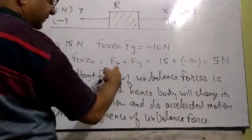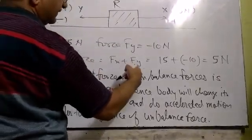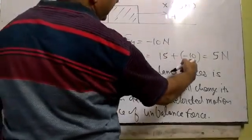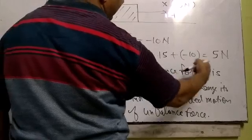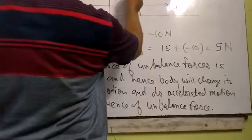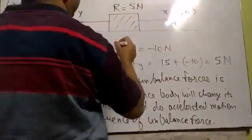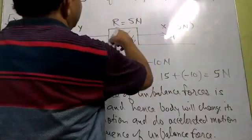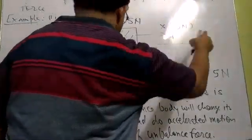What is the resulting force applied on the object by both? The resulting force can be found by algebraic sum of Fx and Fy. So 15 plus minus 10, algebraically when we add it will be 5 newton, meaning plus 5 newton. The resulting force is 5 newton and the body will start moving with a resulting force of 5 newton in the positive direction.